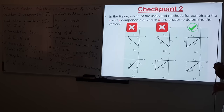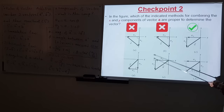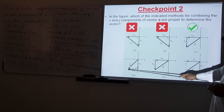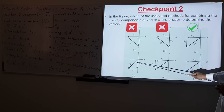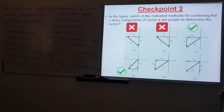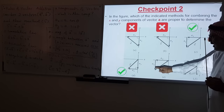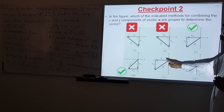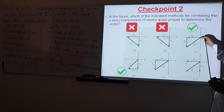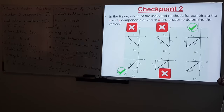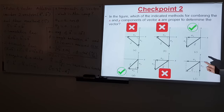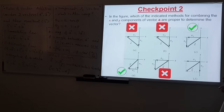The fourth starts with AY then AX — also a valid head-tail method — and the resultant is correctly drawn, so it's correct. The fifth looks like head-tail but the resultant direction is wrong — incorrect. The sixth has tails touching (parallelogram) with the resultant correctly going from origin to opposite corner of the parallelogram — correct.